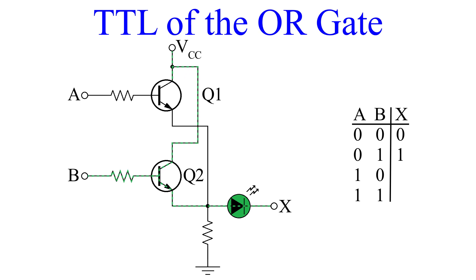Let's turn B off and now turn A on. Q1 turns on because it now has a bias voltage from input A. Q2 remains off since it no longer has that base bias voltage. So with current flowing through Q1 out of the emitter into the LED, our output is 1.